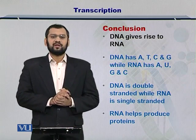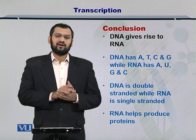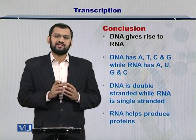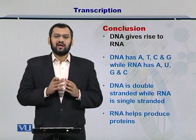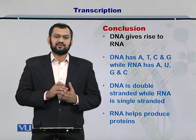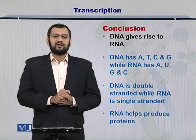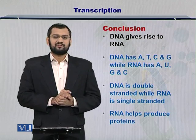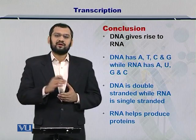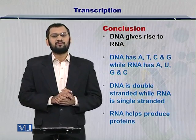In conclusion, DNA gives rise to an RNA. The DNA has four different types of bases — A, T, C and G — while the RNA has one difference: uracil replaces thymine. Furthermore, DNA is double stranded while the RNA is single stranded. These RNA molecules in turn later undergo a process called translation to produce proteins.